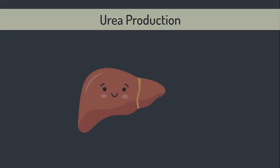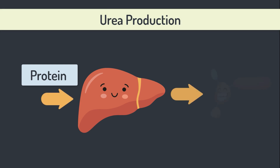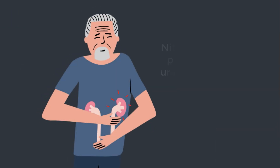Urea is a nitrogenous waste product. We eat protein in our diet, the liver processes this protein and we generate urea. Urea is not the only nitrogenous waste product created here, but it's the one we measure. In that sense urea is a surrogate marker for all of the different nitrogenous waste products in our circulation. It's these nitrogenous waste products that result in the uremic symptoms and complications of end-stage renal failure.